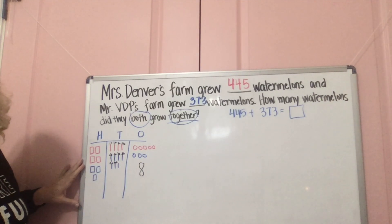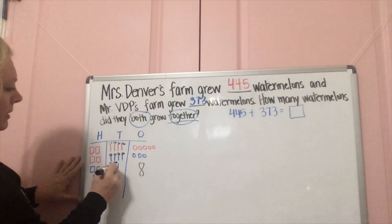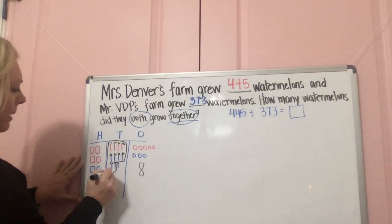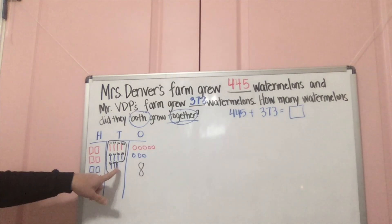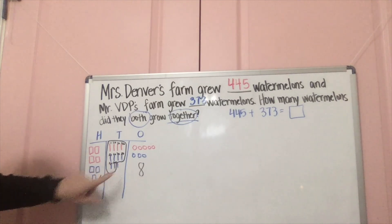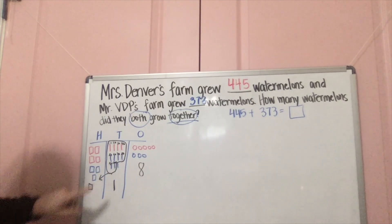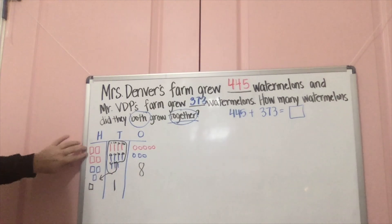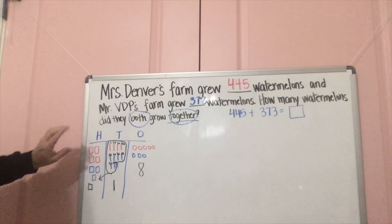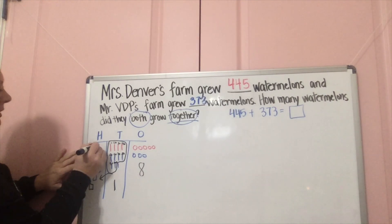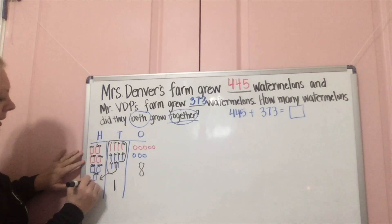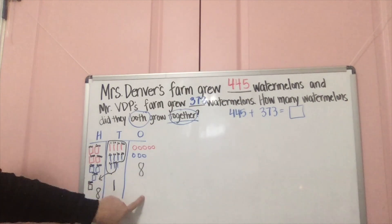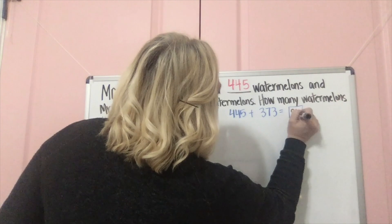Now for the tens: 10, 20, 30, 40, 50, 60, 70, 80, 90, 100 — that makes 100 right here. When you have a hundred, you group it up and pull it over to the hundreds column. So I have 10 left right here — that's just a 10 — and the 100 moves over. Then I count the hundreds: 100, 200, 300, 400, 500, 600, 700, 800. So I get 818 watermelons.